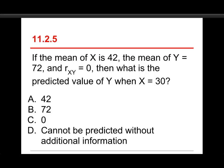Okay, last one for quiz two. If the mean of X is 42 and the mean of Y is 72 and r sub XY, that actually means the correlation between X and Y, is zero, then what is the predicted value of Y when X is equal to 30? And your choices here are: A, 42, B, 72, C, zero, or D, can't be predicted without additional information. Well, this, I'm sorry to say, is a trick question. The answer is 72, which is the mean of Y.